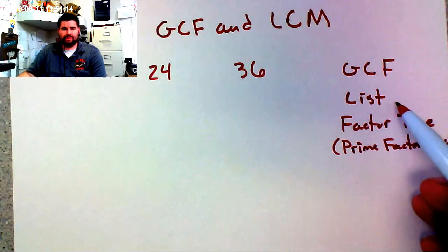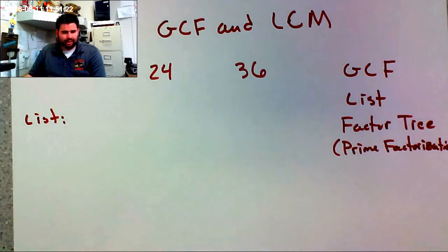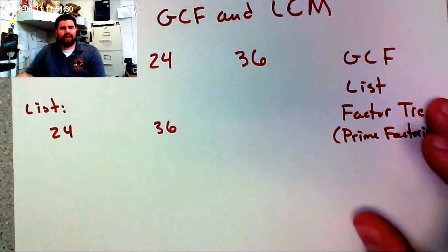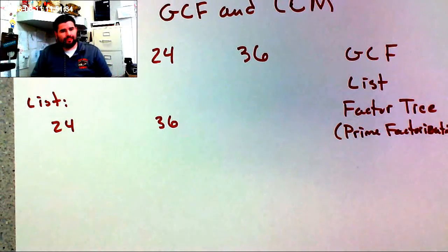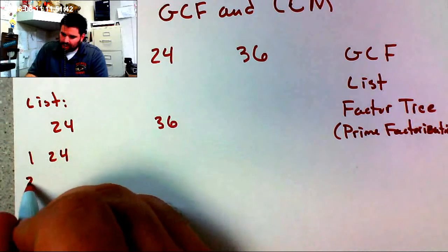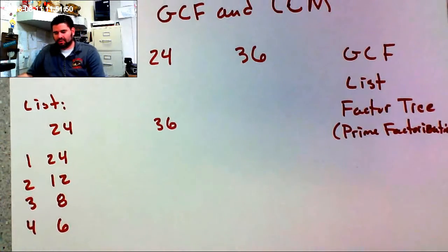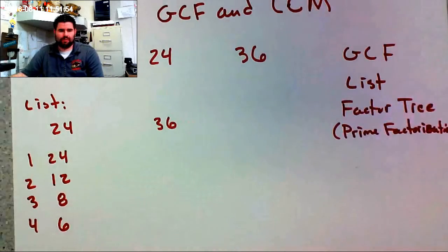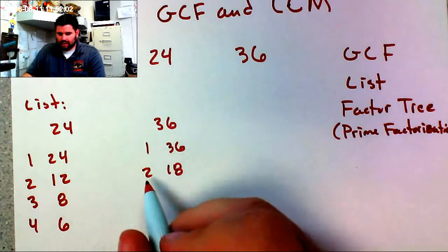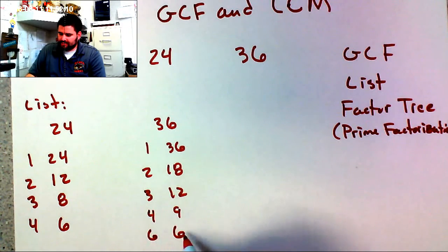I'm going to start with the list method. I'll make a list of all the factors for 24 and all the factors for 36. For 24: 1×24, 2×12, 3×8, and 4×6. For 36: 1×36, 2×18, 3×12, 4×9, and 6×6.